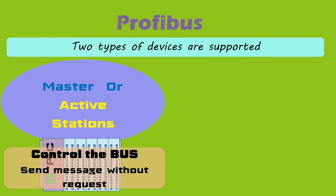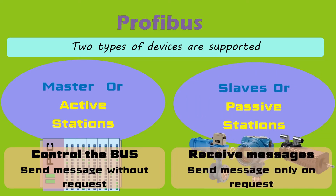Profibus supports two types of devices — Master and Slave. Master devices control the bus; when they get the right to access the bus, they can transfer messages without any remote request. These are also referred to as active stations, and a PLC is an example of a master. Slave devices are normally input devices like input blocks, transmitters, sensors, and actuators. They can receive messages from the master and, on request from the master, can transmit messages back. They are also referred to as passive stations.